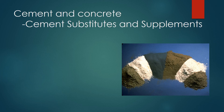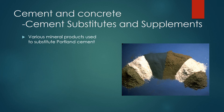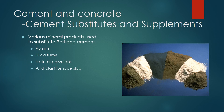There are various mineral products used to substitute Portland cement, and they all come with different advantages. Fly ash, silica fume, natural pozzolans, and blast furnace slag can all be added to increase strength and workability and decrease permeability of concrete.